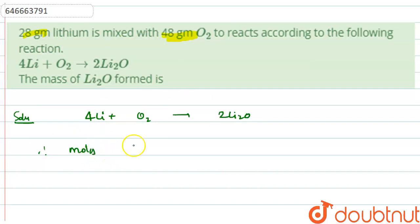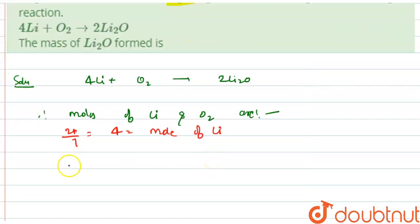Moles of lithium equals 28 divided by 7, which equals 4. Moles of O₂ equals 48 divided by 32, which equals 1.5.